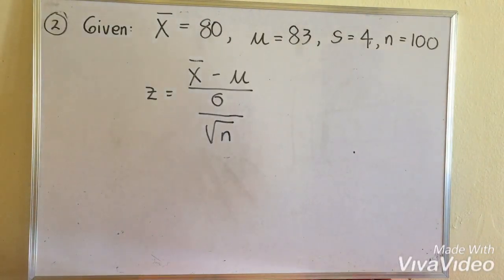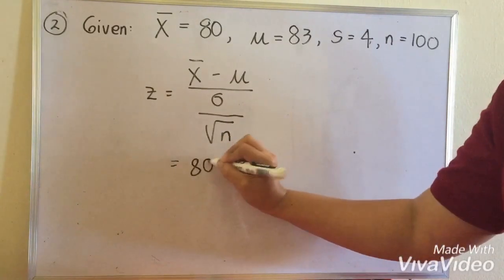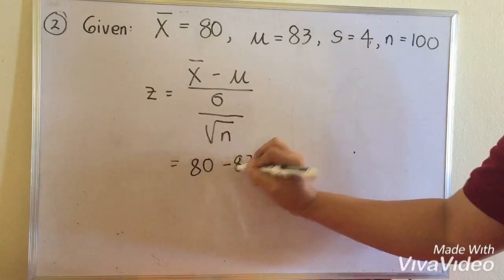Problem number two, our x̄ is 80, minus our population mean 83, over...